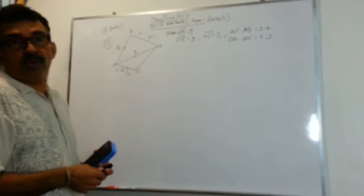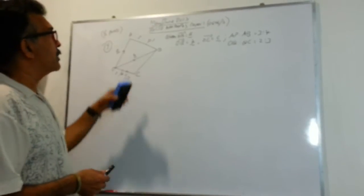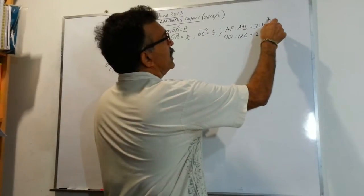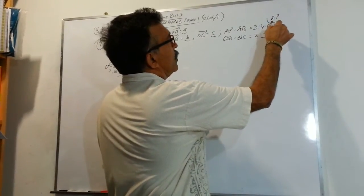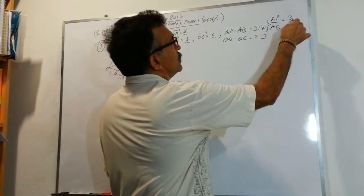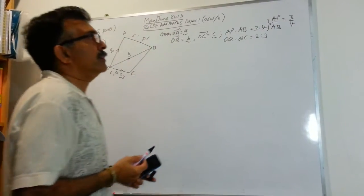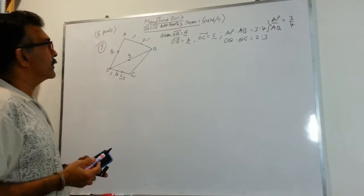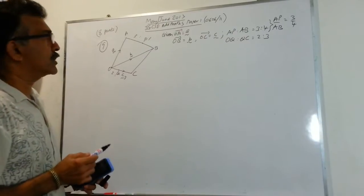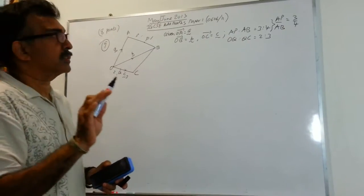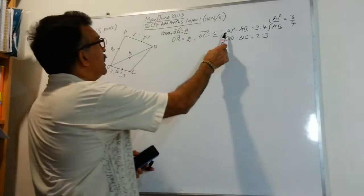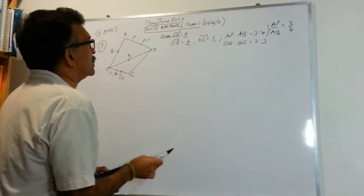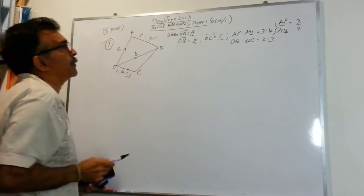They also gave me AP is to AB. Careful. It's AP is to AB. Let me write it here again. This one here is AP over AB equals to 3 over 4. And they gave me OQ is to QC. OQ is to QC is 2 is to 3. Again, because it's important, this is AP is to AB, the whole line. It's 3 is to 4. So, that's why I've indicated this is 3 parts is to 1 part.